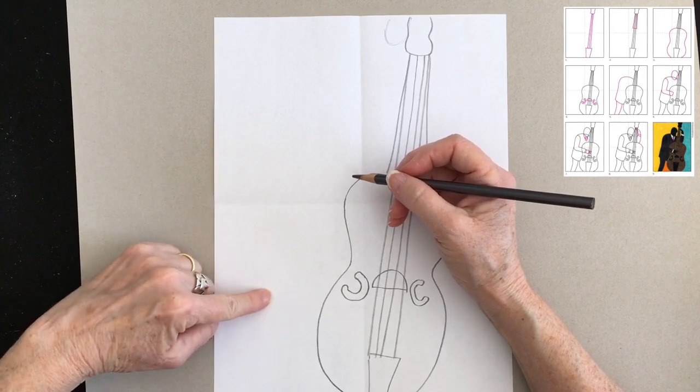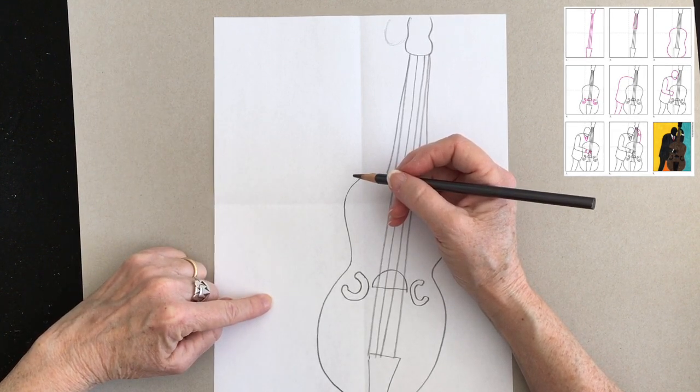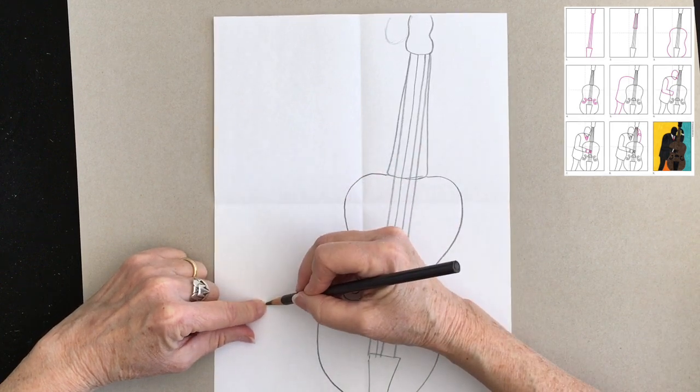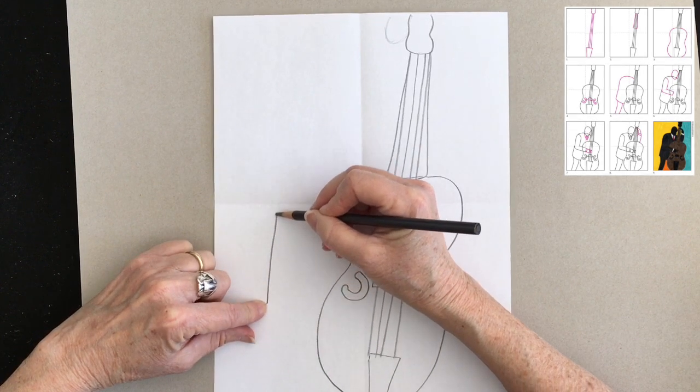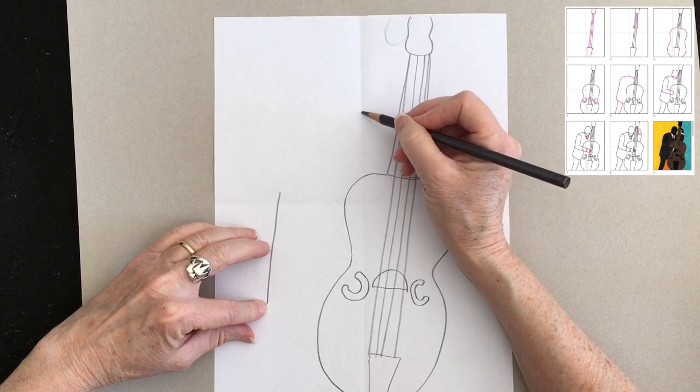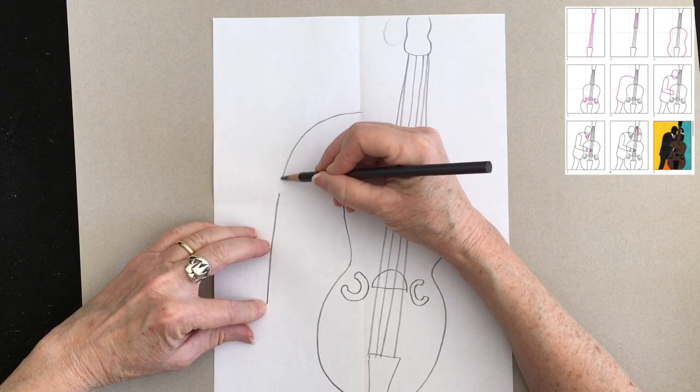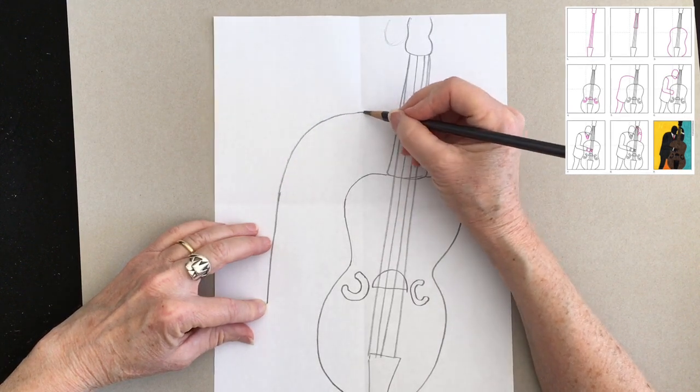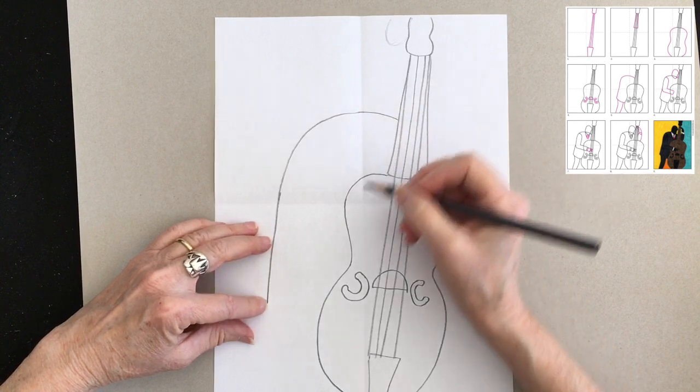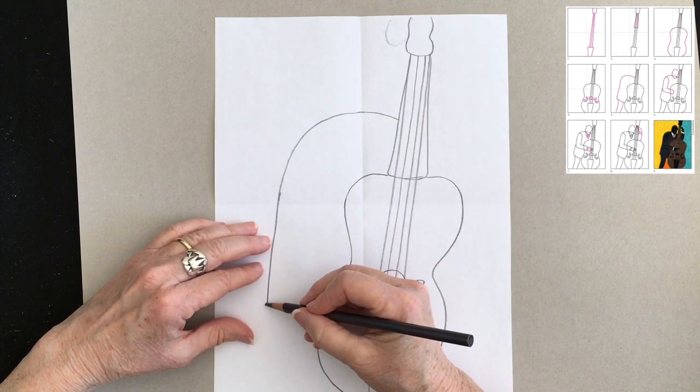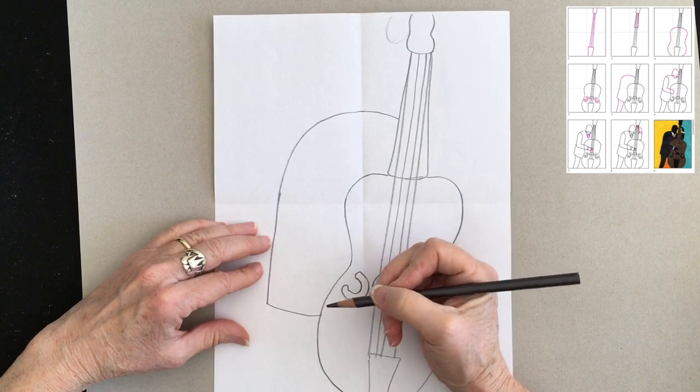Now I'm going to start what might be the challenging part, and that is the body of the bass player. So notice how I use my finger to help me figure out where am I going. I love using those two cross lines because that helps me remember where I need to be to make my drawing work.